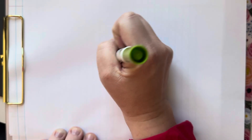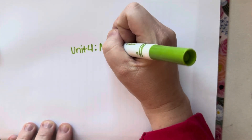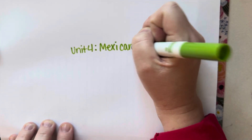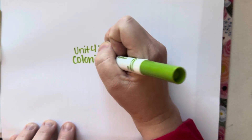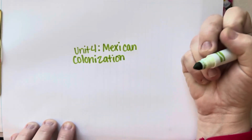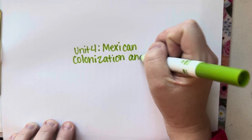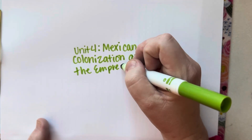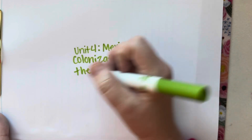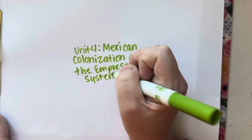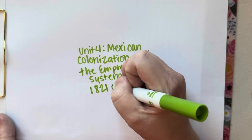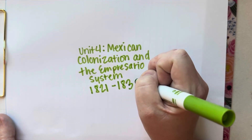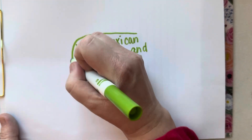Dearest Texas history scholars, today we're going to make a study guide for Unit 4. Unit 4 was about Mexican colonization and the impresario system. This goes from about 1821 to 1835, which was a year before the Texas Revolution.